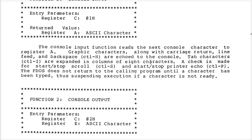Tab characters are expanded. A check is made for start/stop scroll — so if you hit control S it'll stop. If there's a lot printing to the screen it'll pause. If you hit control P, it's a toggle that copies what's going to the screen to the printer as well. These are handy free features. You don't have to do this in your program — it all just does it for you. That's why you have an operating system.